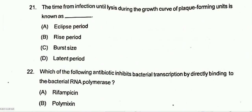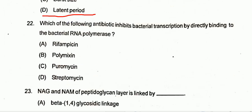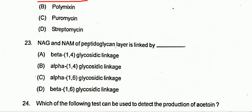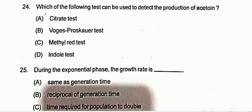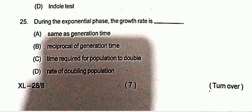Question 21: The time from infection until lysis during the growth curve of plaque-forming units is known as Option D: the latent period. Question 22: Which antibiotic inhibits bacterial transcription by directly binding to bacterial RNA polymerase? Option A is correct: rifampicin. Question 23: N-acetylglucosamine and N-acetylmuramic acid in the glycan layer are linked by Option A: beta-1,4 glycosidic linkage. Question 24: Which test detects the production of acetone? Option B: the Voges-Proskauer test. Question 25: During the exponential phase, the growth rate is the rate of doubling of the population. Option D is correct.